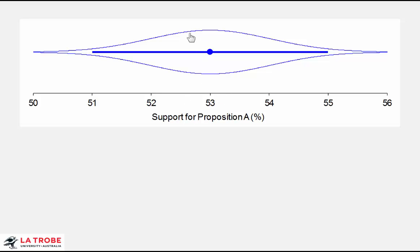High likelihood. And as the cat's eye figure gets progressively thinner, these values get progressively less plausible — less likely to be the true values in the population as we move further away from our point estimate.